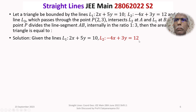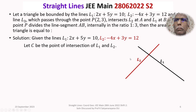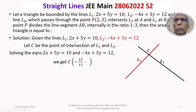Let us see the diagram. This is our L1, this is our L2, and let C be the point of intersection of these two lines L1 and L2. To find the coordinates of point C we solve the equations of L1 and L2: 2x plus 5y equals 10, and minus 4x plus 3y equals 12. Solving, we get the coordinates of C as minus 15 by 13 comma 32 by 13.